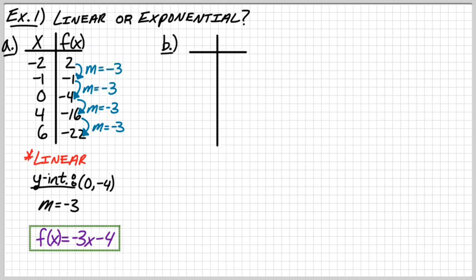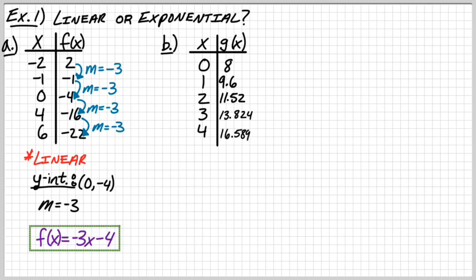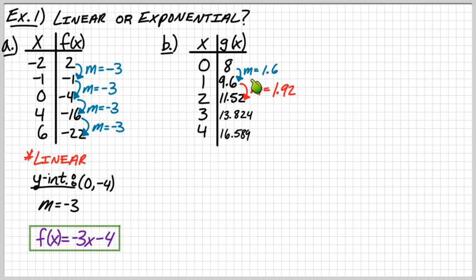Let's look at part B with another table for x and g(x), x values going 1 through 4. If you try to say this is linear, the slope between the first two points is 1.6, and the slope for the second pair is 1.92. Those slopes are different — alarm should go off — this is not linear.